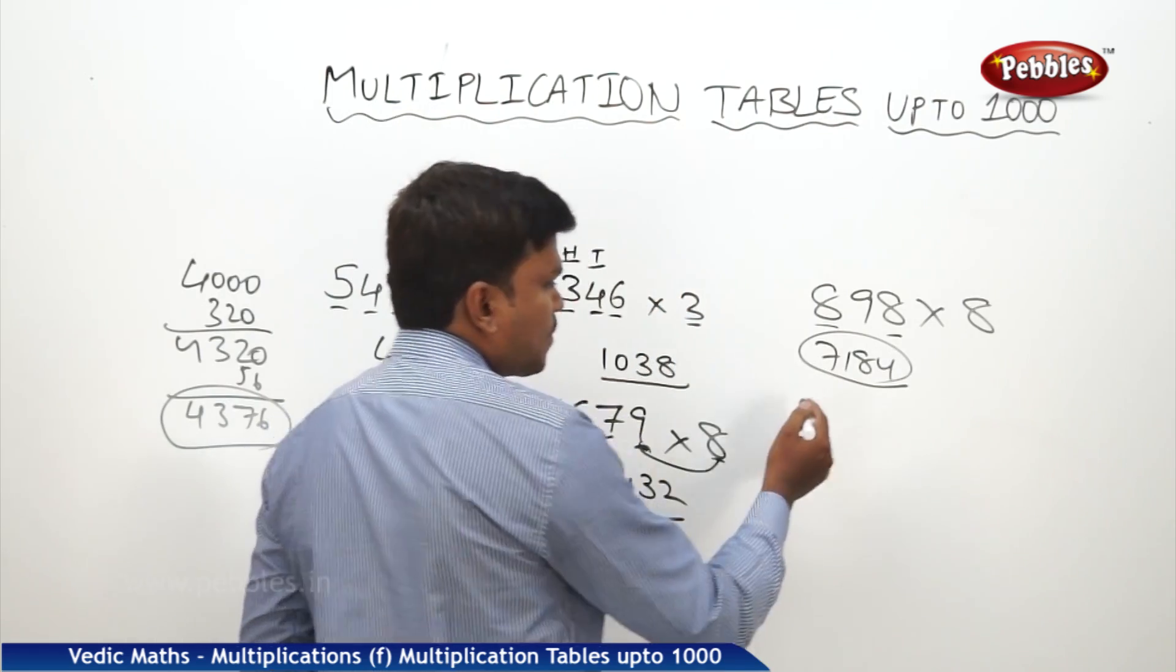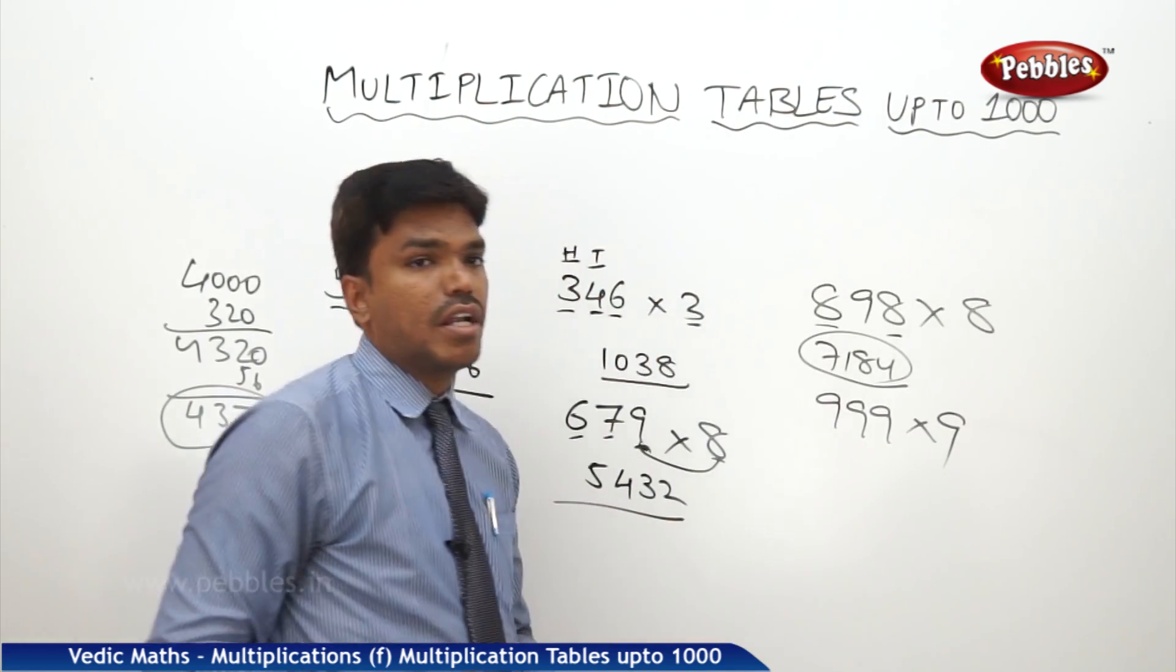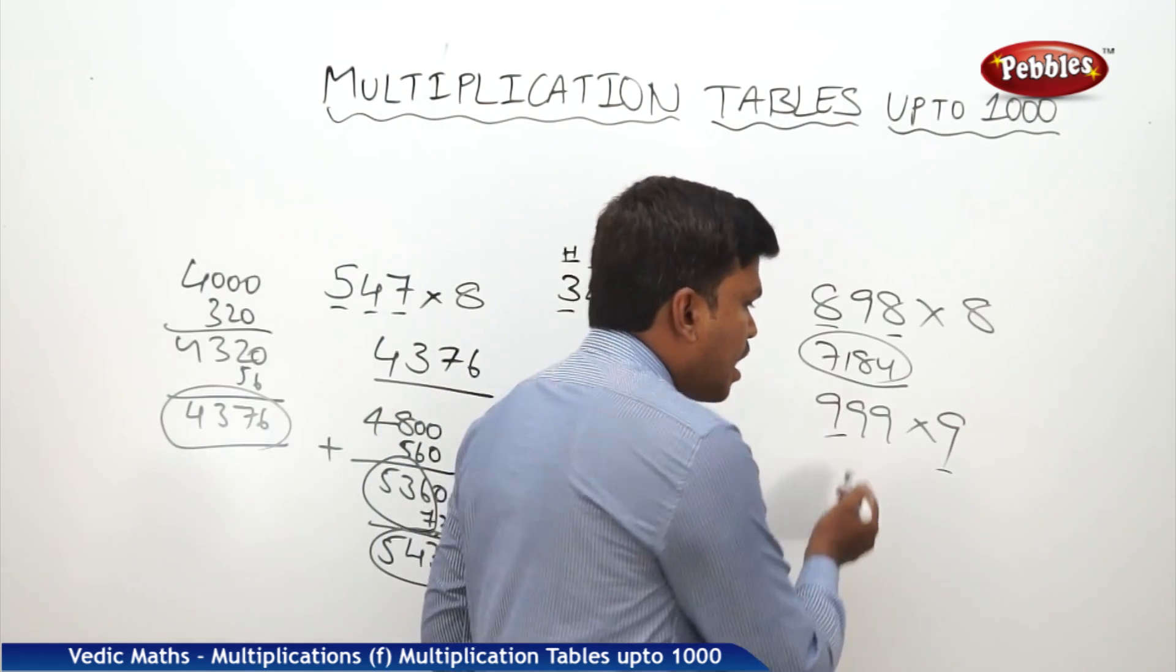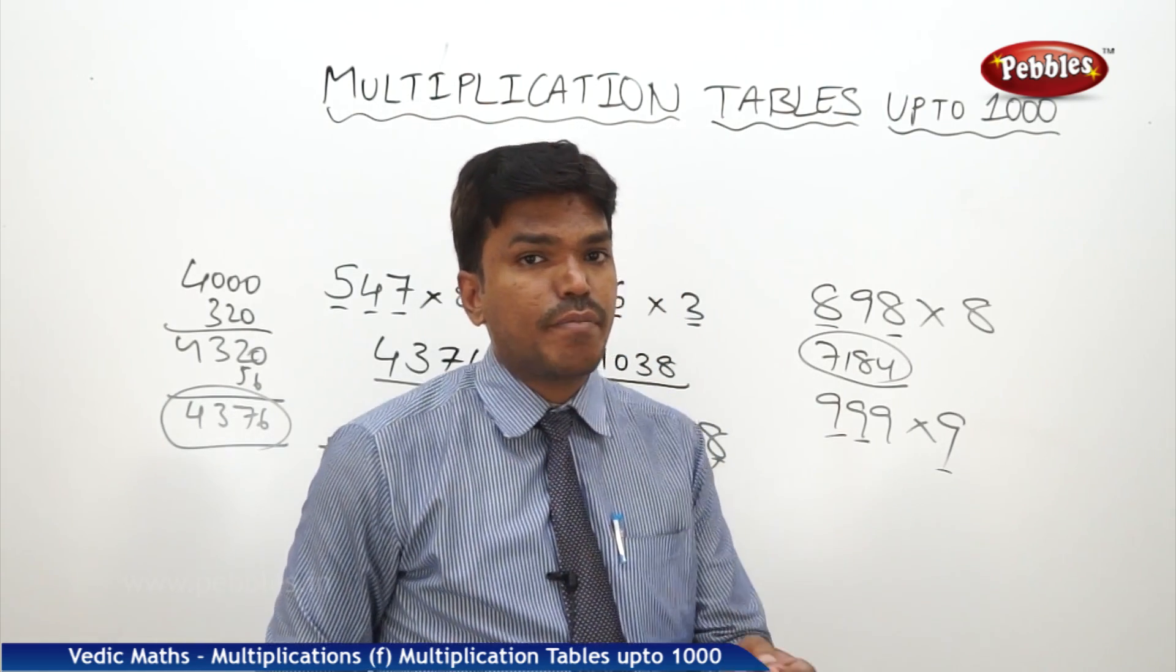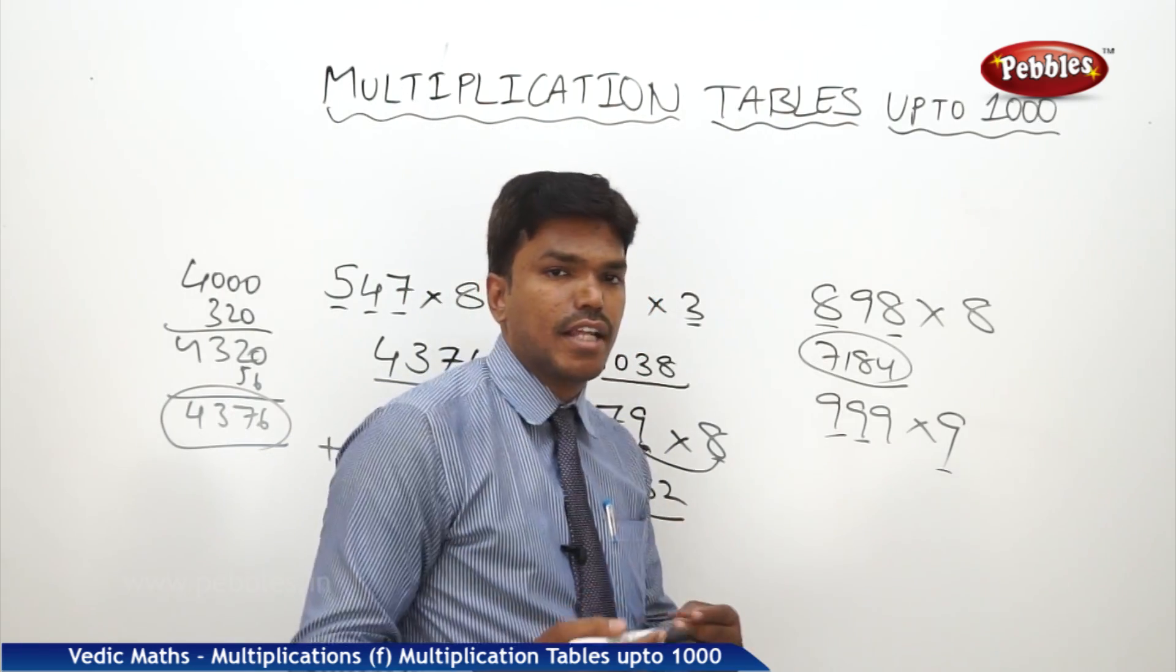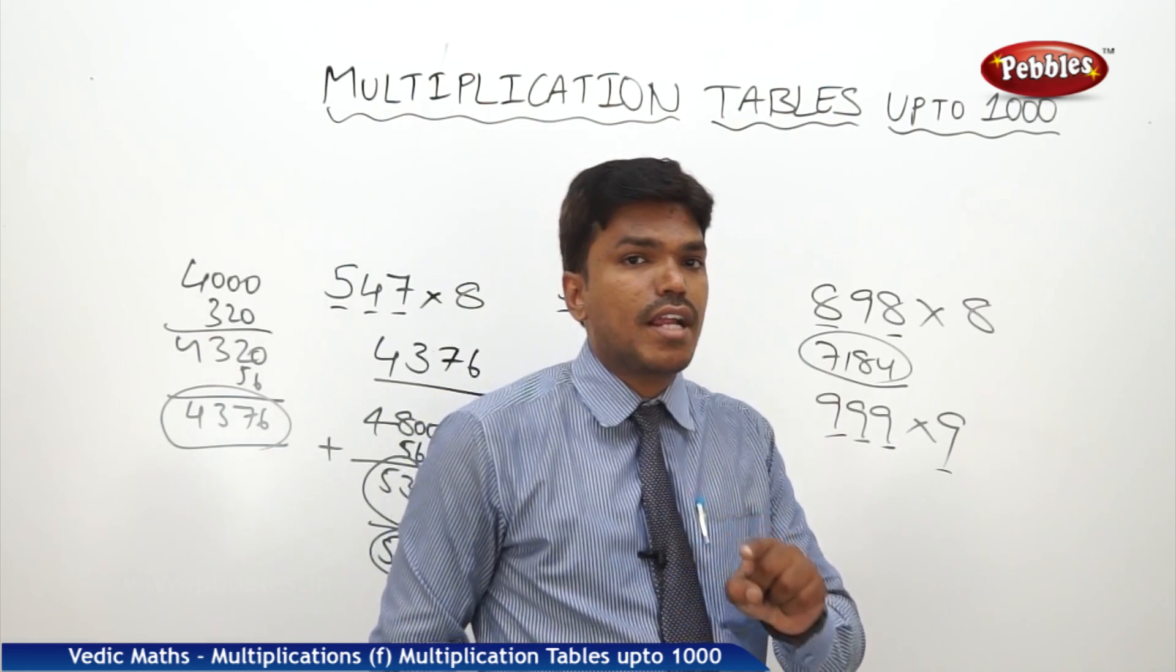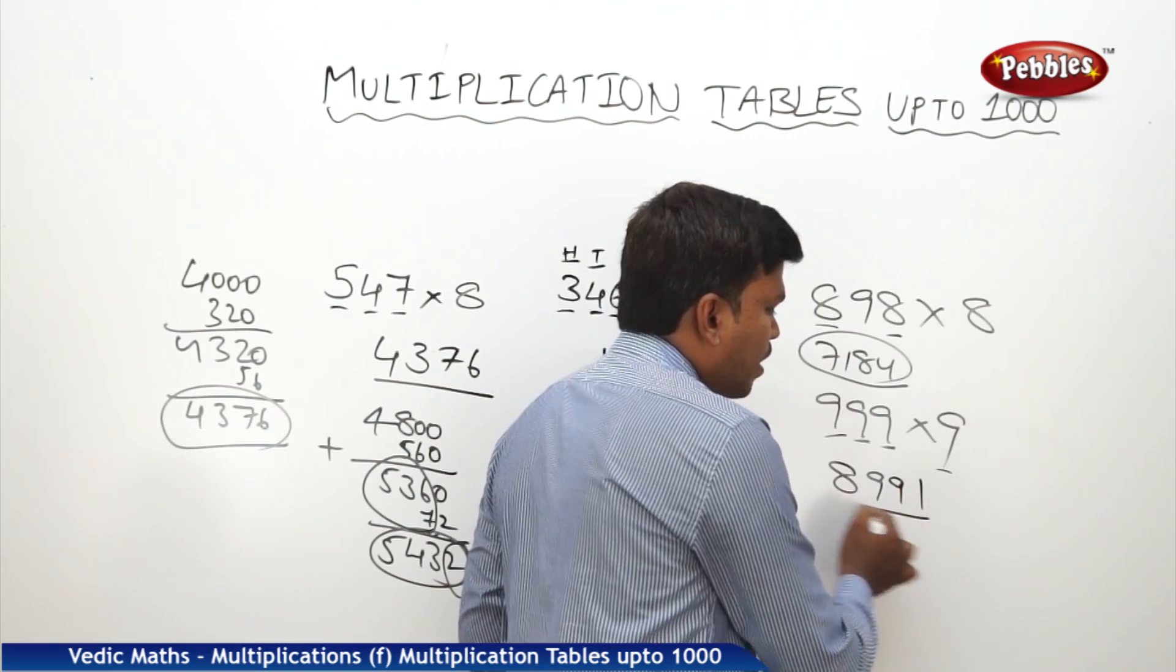Similarly, say 999 into 9. This time you tell me the same way. 8100 in the mind. 8100 plus 810, 8910. 8910 plus 81, 8991. This will be your answer.